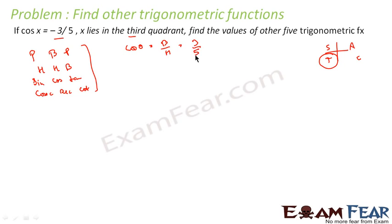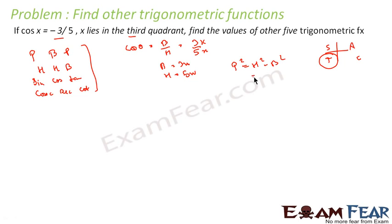We will assume b is equal to 3x and h is equal to 5x, because b by h equals 3 by 5. Now we know that p² equals h² minus b², so p² equals 25x² minus 9x² equals 16x². Therefore p is equal to 4x. So now we have p, b, and h and then we can find anything.